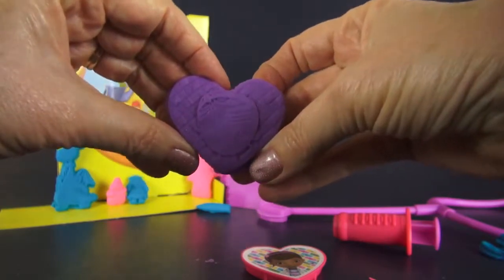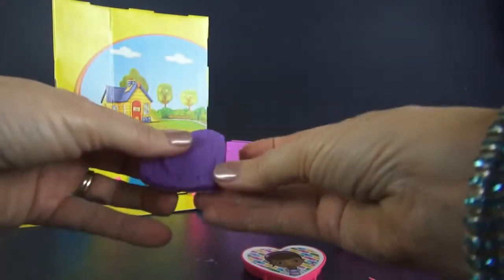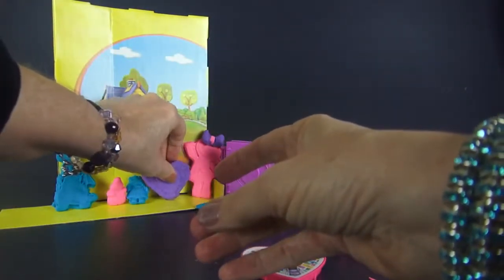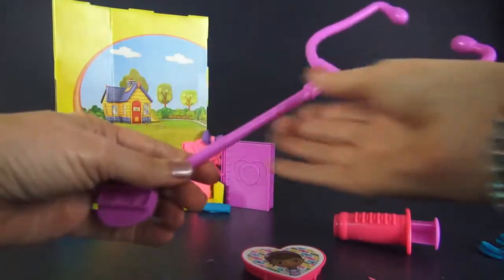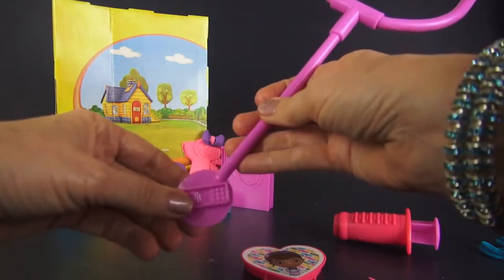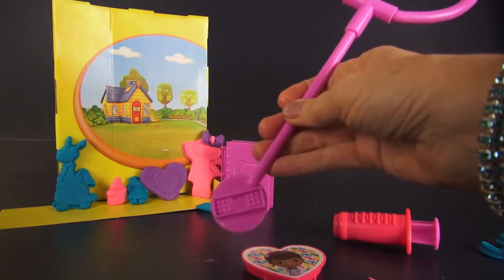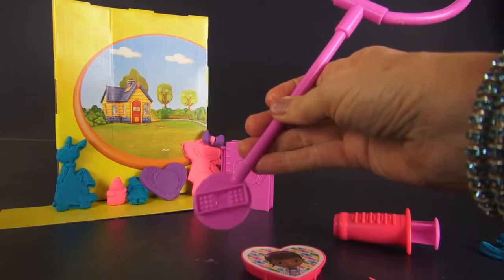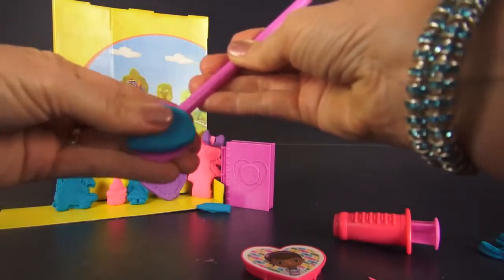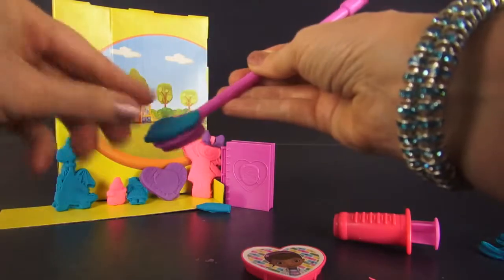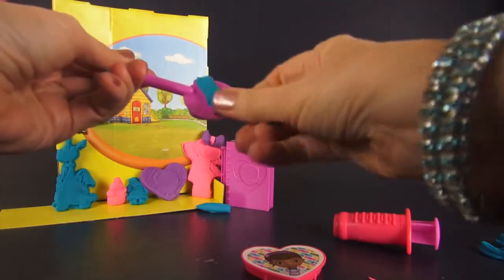There. I like the sparkle. It looks very nice. So, now we have Doc and the office could be open except I think it needs some supplies. So, we're going to use her magic stethoscope to make some supplies. And first, we are going to make the band-aid. And I think we'll use some blue Play-Doh for that.